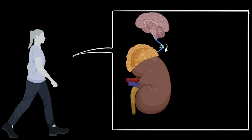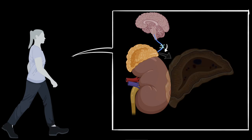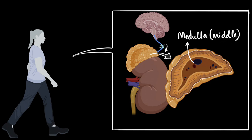And if you look inside the adrenal gland, you'll actually see that there are two parts to it. You have the middle part, which is called the medulla. This is called the medulla, and I remember it as the middle part—middle medulla.